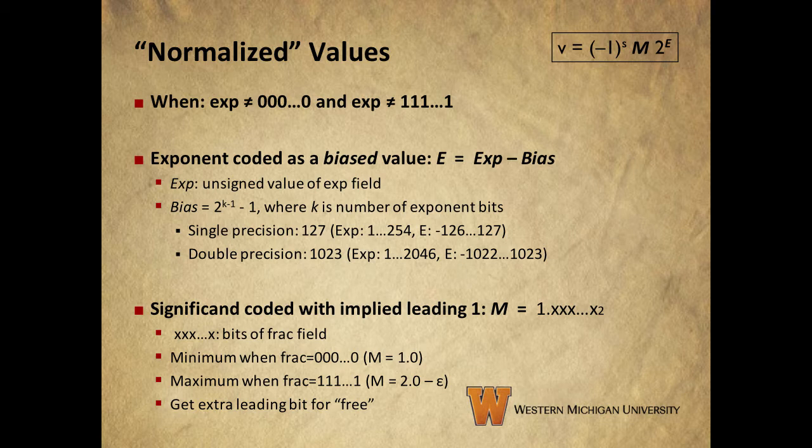The value is normalized when the EXP field contains neither all zeros nor all ones. The exponent is coded as a biased value. The EXP field is treated as an unsigned value. The bias is equal to 2 to the k minus 1, minus 1, where k is the number of exponent bits. So, since single precision has an 8-bit EXP field, the bias value is 2 to the 7 minus 1, or 127.